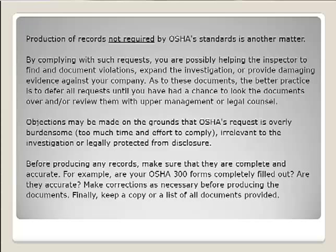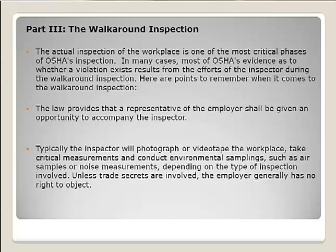Before producing any records, make sure they are complete and accurate — review them prior to submitting. The walk-around inspection is the next part of the process and one of the most important phases. In many cases, the majority of OSHA's evidence as to whether a violation exists results from the inspector's efforts during the walk-around. They have to prove there's a violation, which is why they'll conduct interviews, take photos, ask questions, and review written programs.